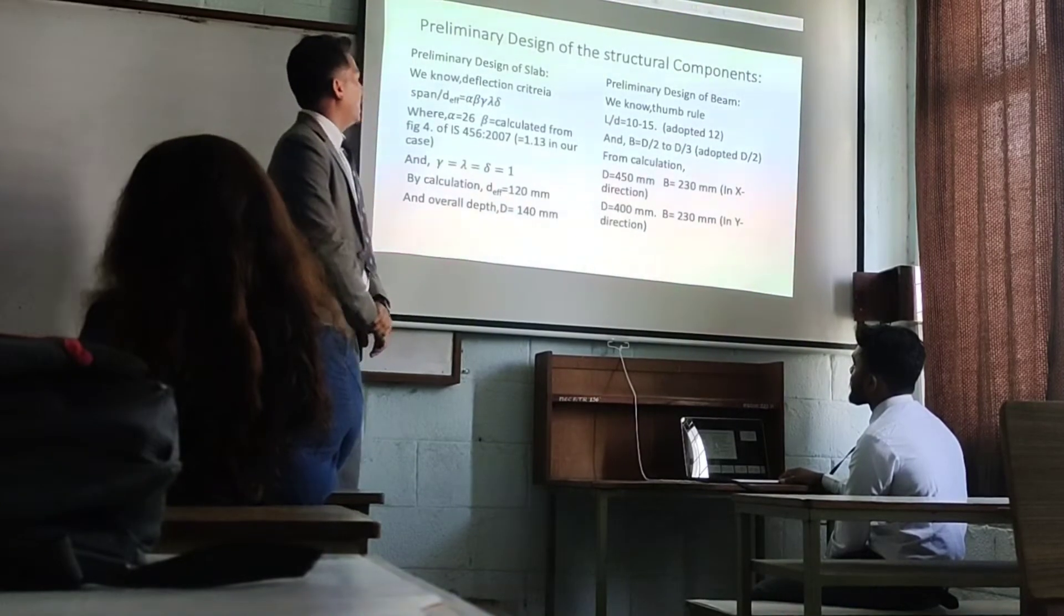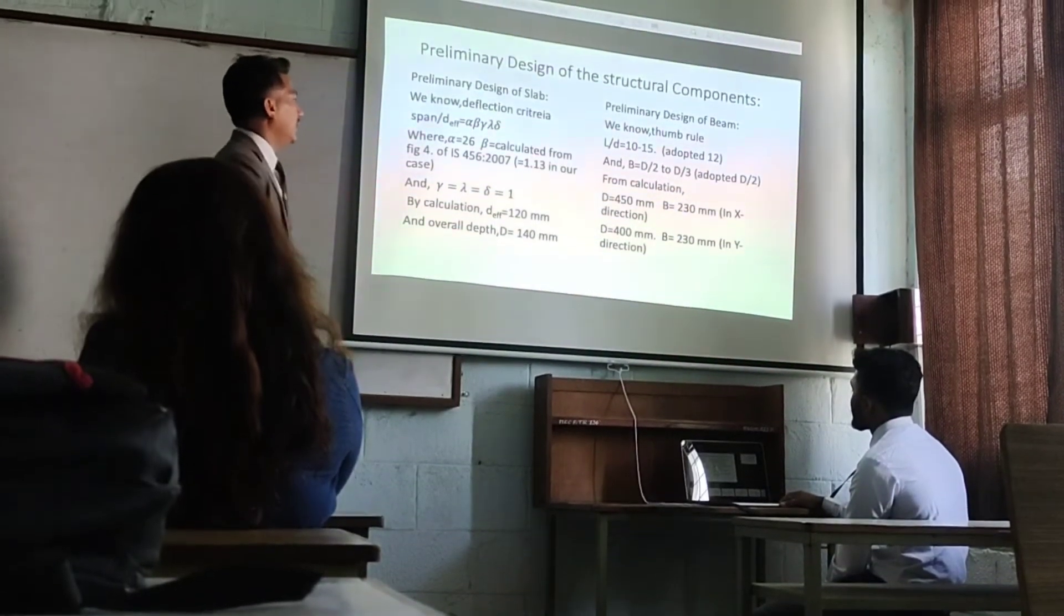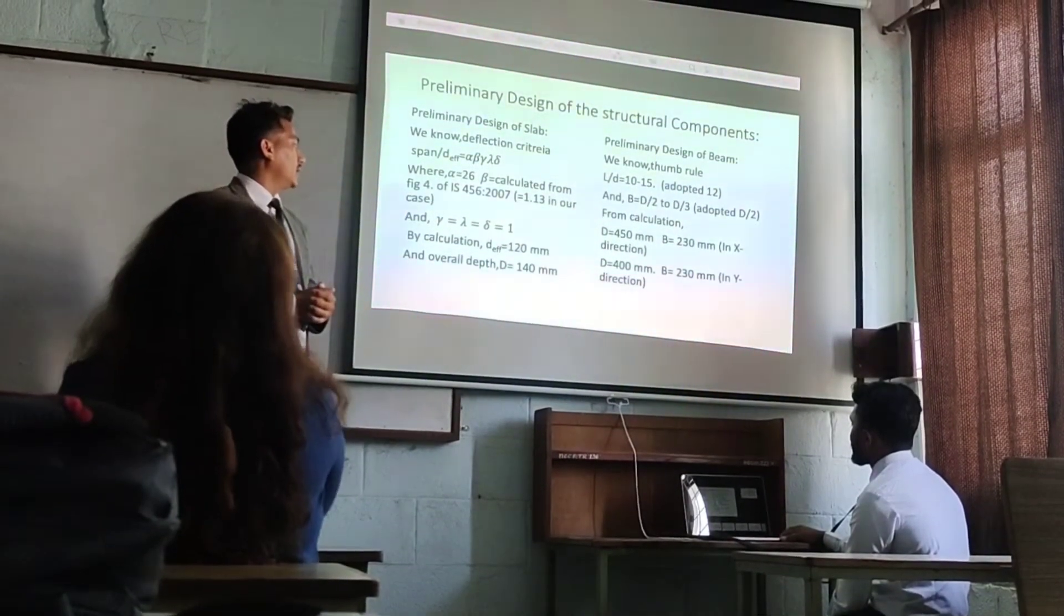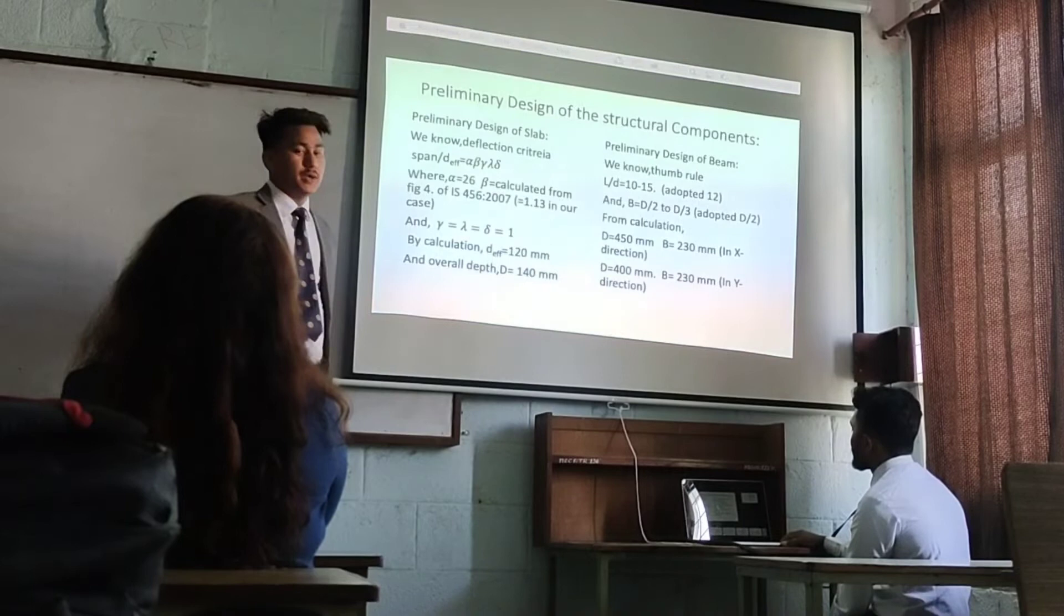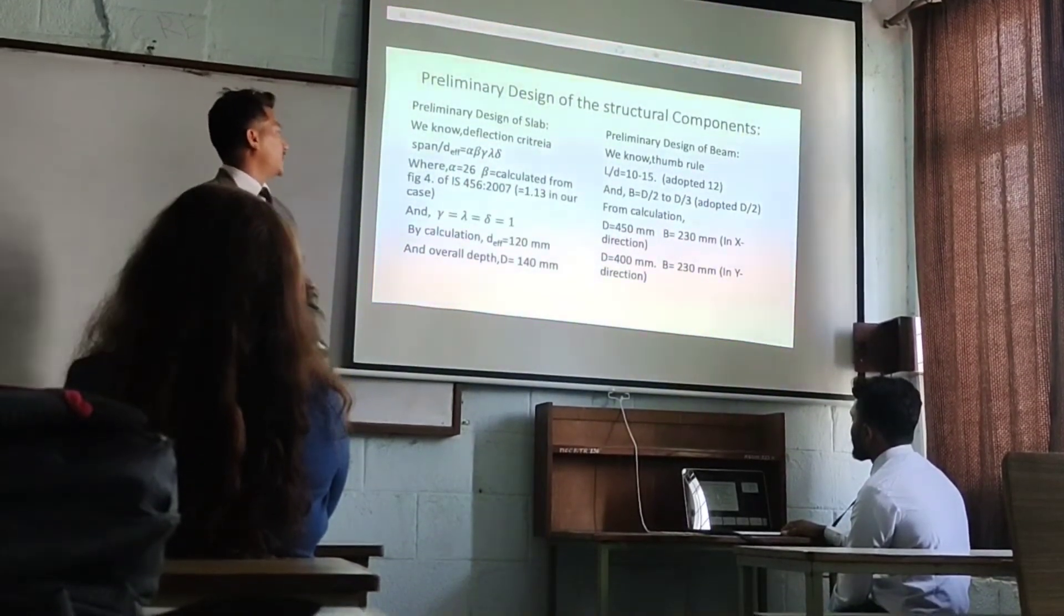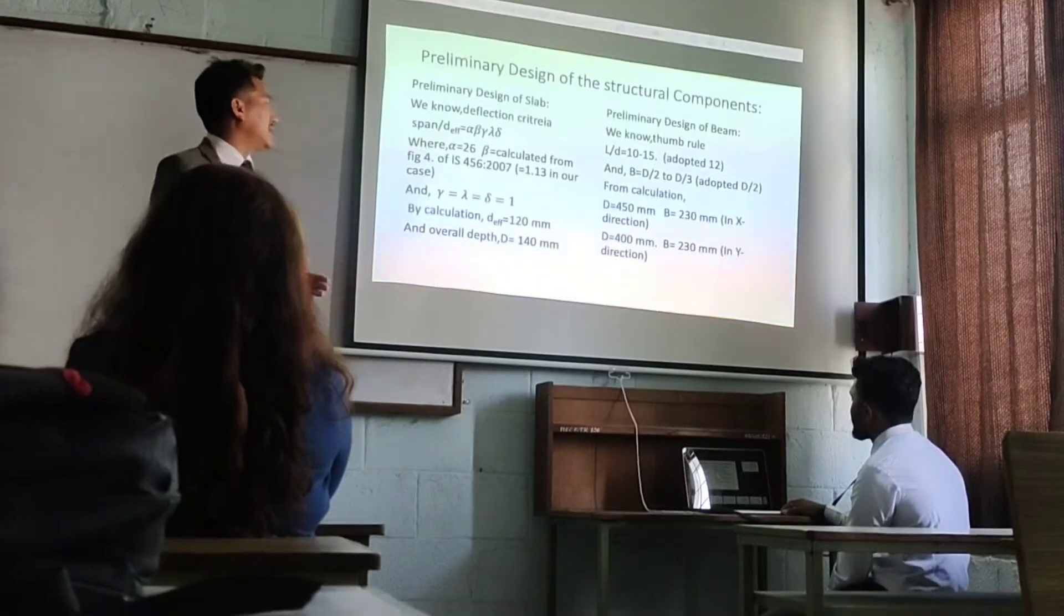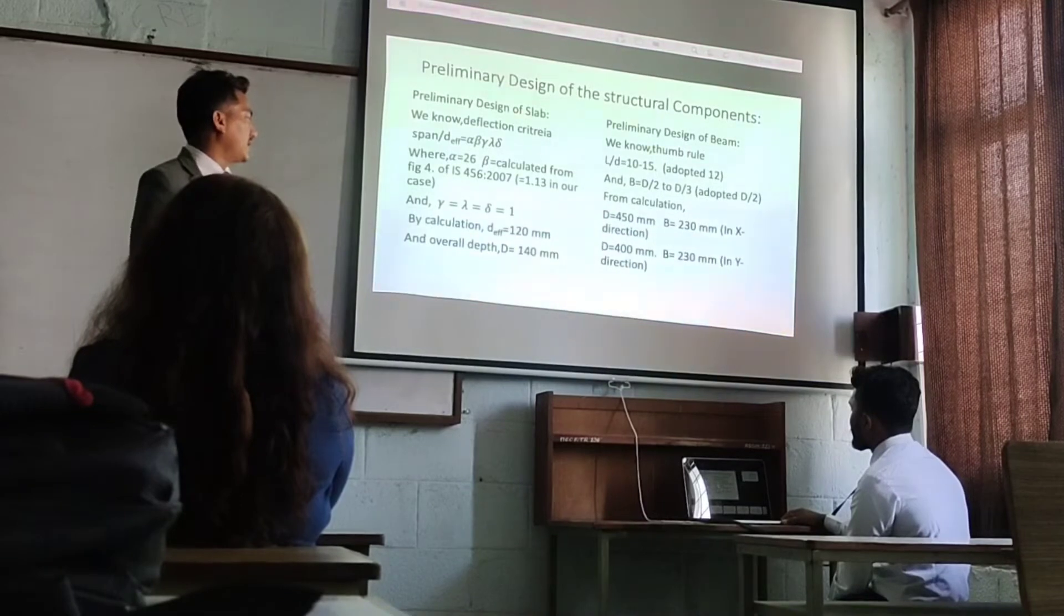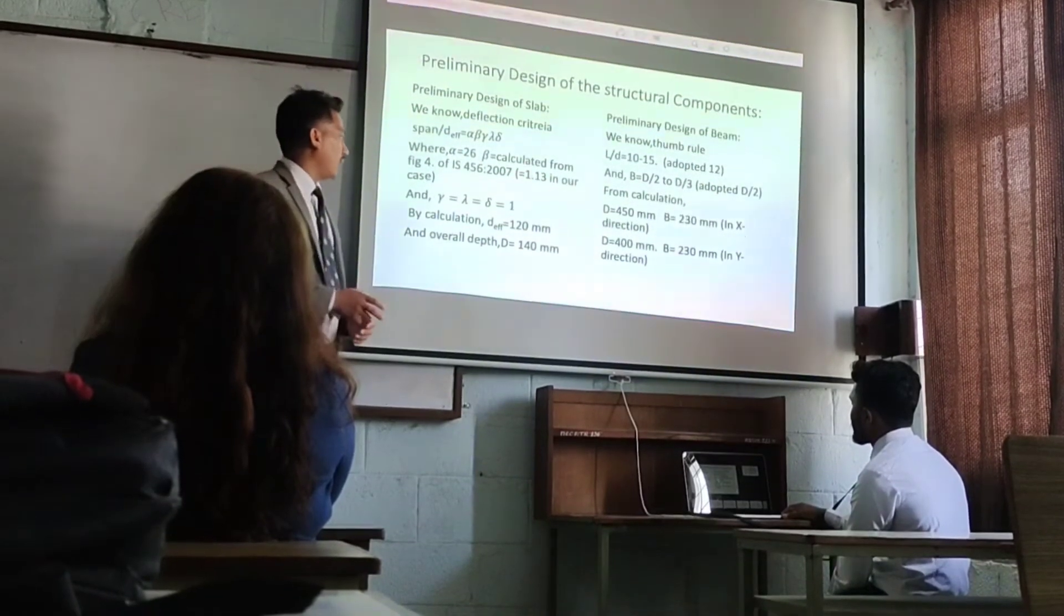For the beam design, we calculate the compatibility of depth and width. The width is the overall depth divided by 2. We calculated the width as 320 mm and the overall depth as 440 mm. The longer span is called the X-direction, and the Y-direction is the shorter span or short edge span.